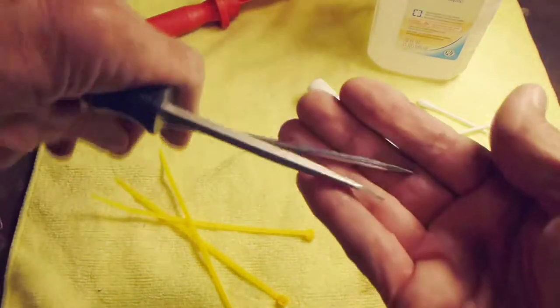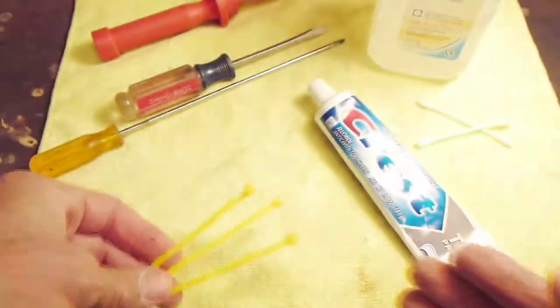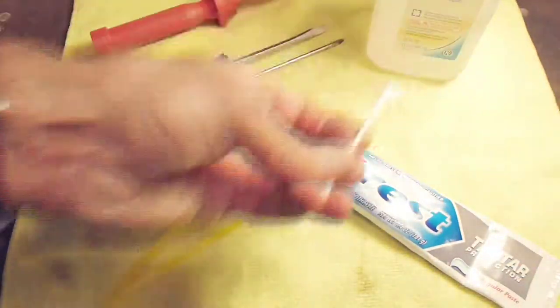I'm also going to use a couple of screwdrivers. You could probably just use one. And what's this? We've got zip ties, toothpaste. We're going to use toothpaste in this video to fix this switch. And we've got some Q-tips and some rubbing alcohol too.